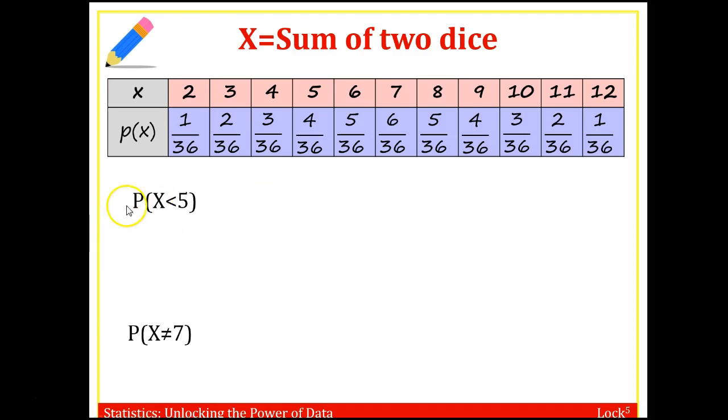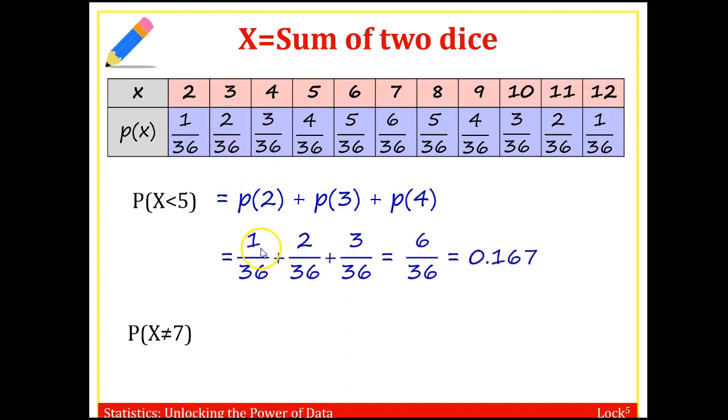So we'll look at a couple examples. What is the probability that X is less than five? And I'm going to use this table directly. Well, less than five would be you get a two, three, or four. So you would actually take, add up the probability that you can get a sum of two, a sum of three, the sum of four, add all these numbers up, one over 36, plus two over 36, plus three over 36, six over 36 to get about 17%.